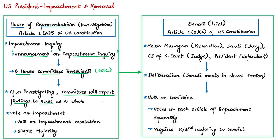Each investigating committee may report separate findings based on their investigation. Finally, an impeachment resolution is made containing articles of impeachment — which are charges of misconduct. For Trump, there are two charges: abuse of power and obstructing the US Congress. A voting process then happens in the House of Representatives on this impeachment resolution, requiring only a simple majority for passage.